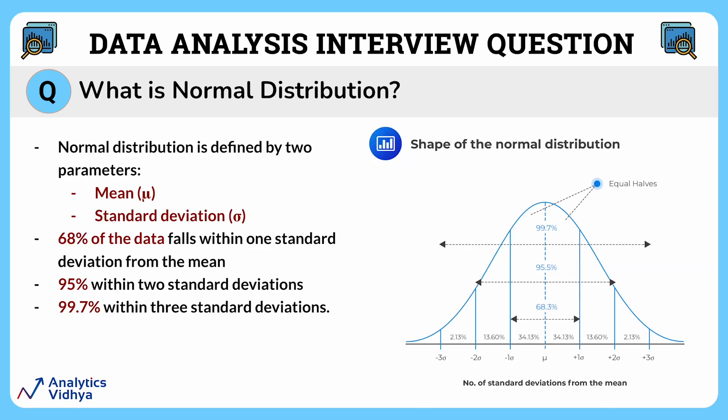Normal distribution is defined by two parameters: the mean, which represents the central value, and the standard deviation, which measures the spread or dispersion of the data.